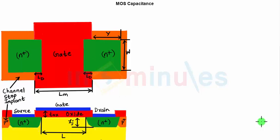Welcome to 'In 5 Minutes.' The agenda of this clip is to understand MOS capacitance. We know that in order to study the transient response or AC response of a MOS device, we need to find the value of its capacitance, and that is what we are going to do in this clip.